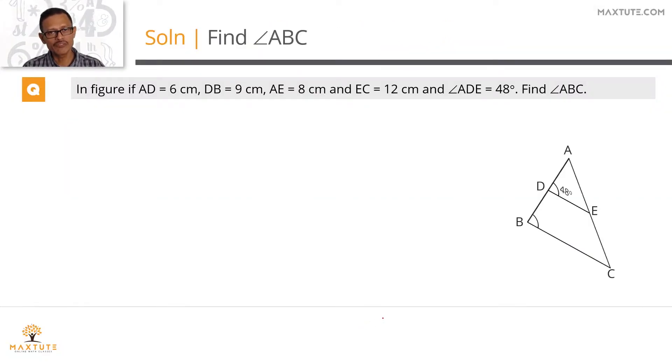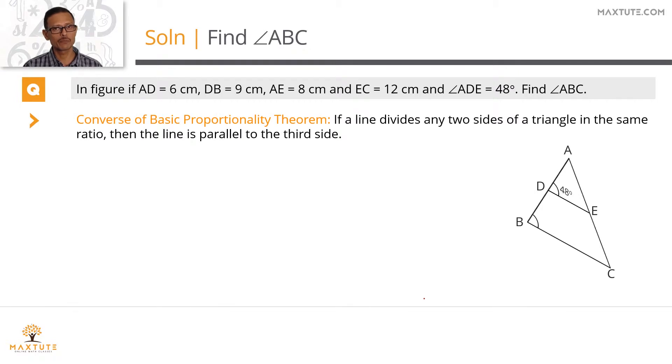At the outset, if there is some way we can establish that DE and BC are parallel, then angle ADE will be the same as angle ABC. How are we going to manage it? We're going to manage it using the converse of the basic proportionality theorem.